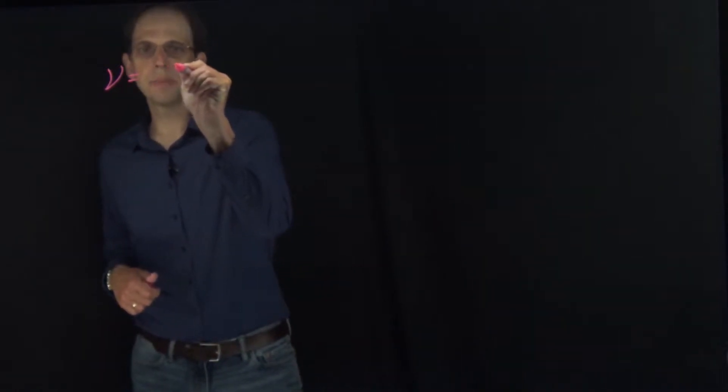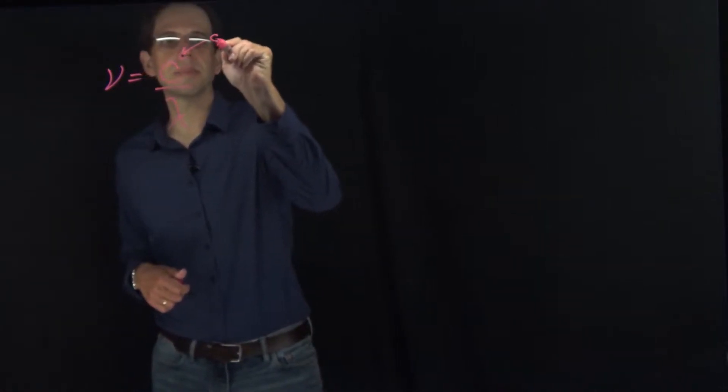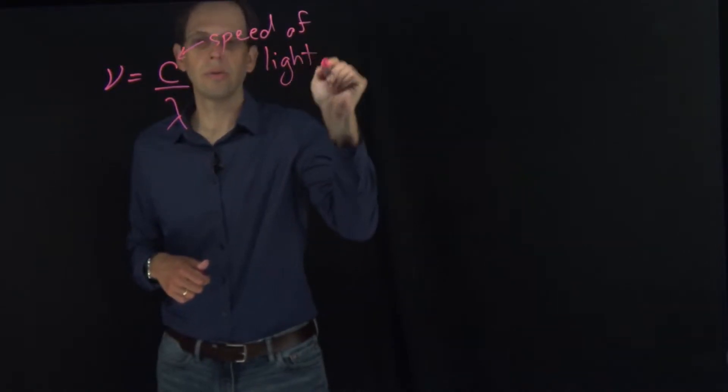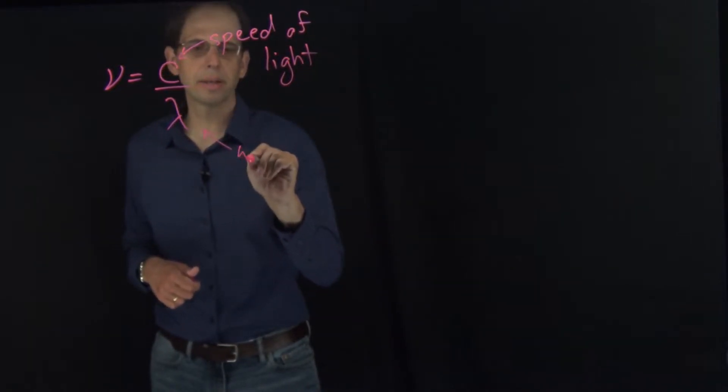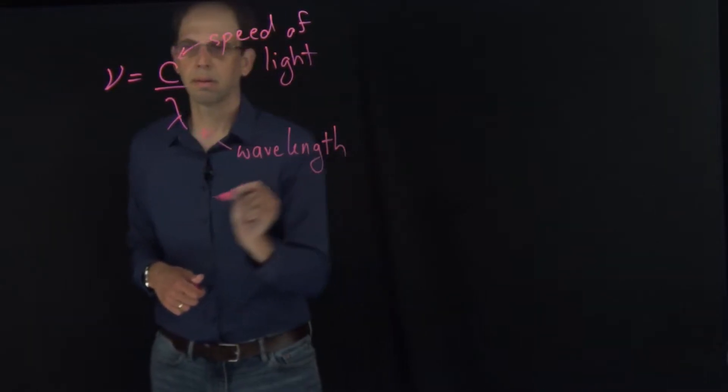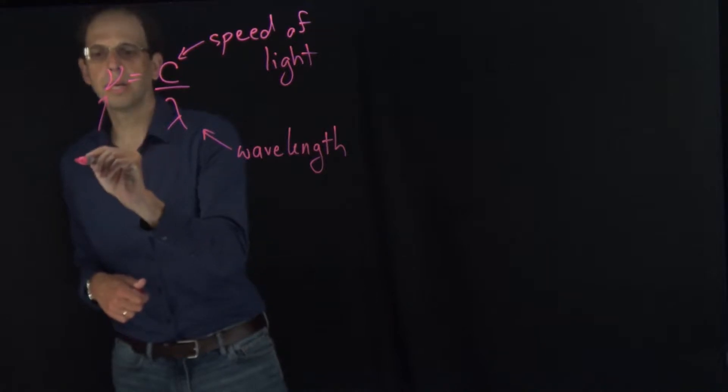There are two key expressions that you need to remember. The first is that the frequency nu is equal to the speed of light c over lambda. So, c is the speed of light, lambda is the wavelength, and nu is the frequency.